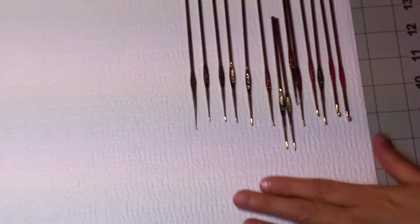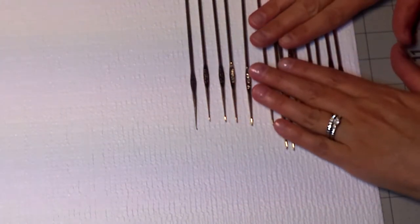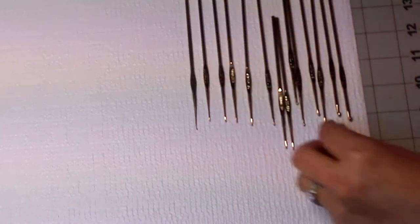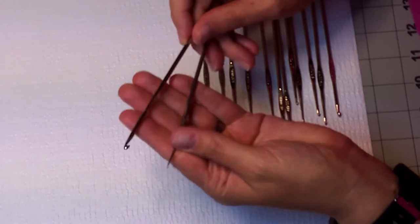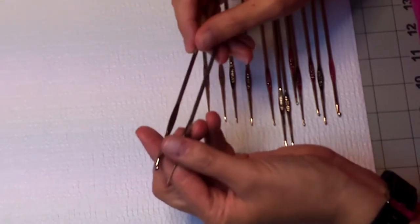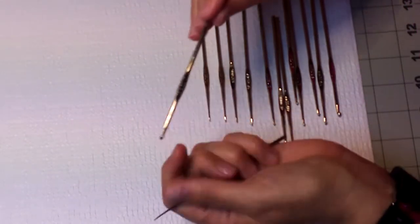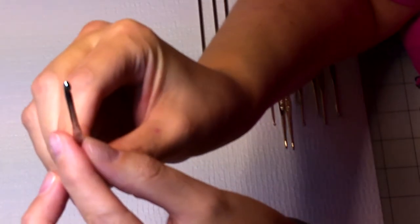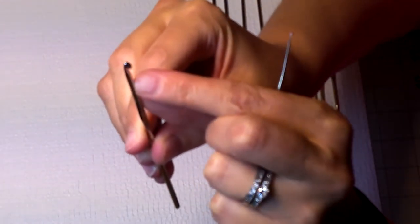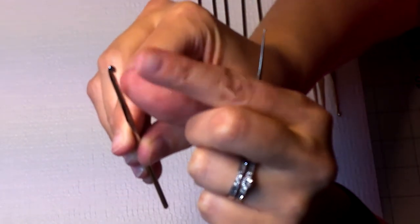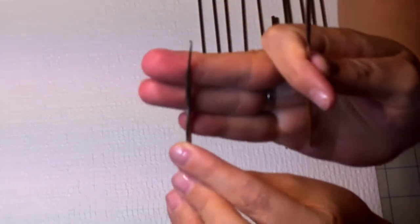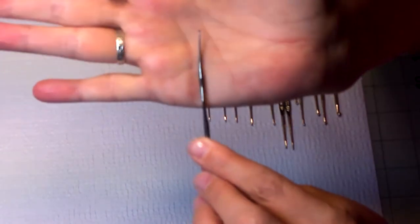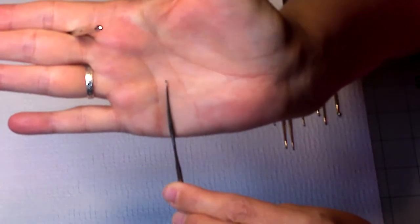Now I am going to show you stainless steel hooks. Stainless steel hooks come in many sizes. Typically with a stainless steel hook, the smaller the number the larger the hook. This is a size 11 hook and if you notice you can barely see the hook on there.